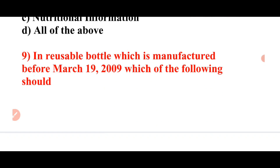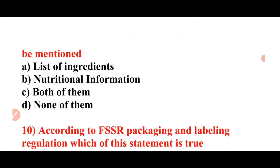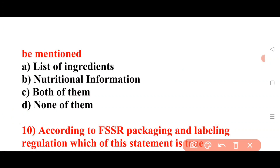Next question: In a reusable bottle manufactured before March 2019, which of the following should be mentioned? Options: list of ingredients, nutritional information, both, or none. Answer: nutritional information is the correct answer.